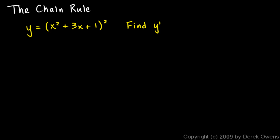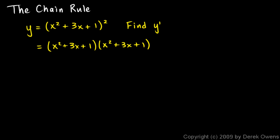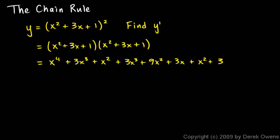So according to the techniques we've learned so far, we would have to multiply this out. This would be (x squared plus 3x plus 1) times (x squared plus 3x plus 1). Our answer will be a big polynomial, and we can just take the derivative term by term. To do this, we multiply each of the three terms by each of the other three terms and get 9 terms. So we get x to the fourth plus 3x cubed plus x squared plus 3x cubed plus 9x squared plus 3x plus x squared plus 3x plus 1.